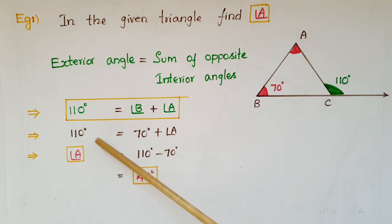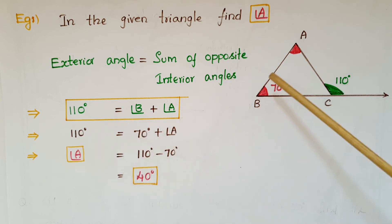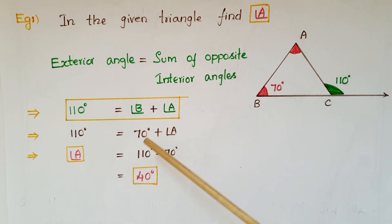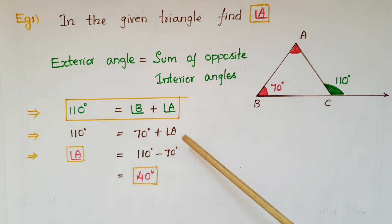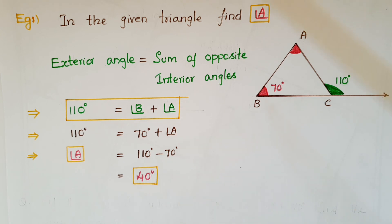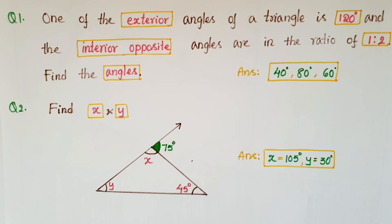Since angle B is 70 degrees, we have 110 equals 70 plus angle A. Therefore, angle A is equal to 110 minus 70, which is 40 degrees. Now do these questions.